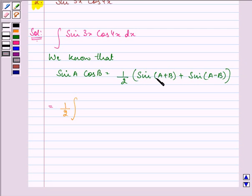Here, with a = 3x and b = 4x, sine(a+b) = sine 7x and sine(a-b) = sine(-x). This is further equal to 1/2 integral of sine 7x plus 1/2 integral of sine(-x) dx.